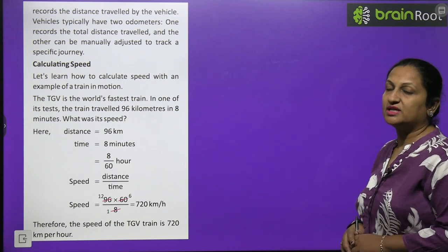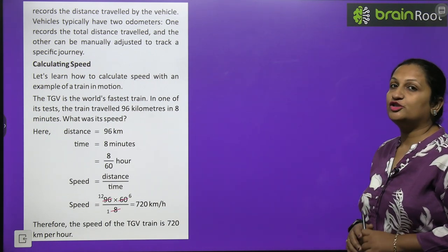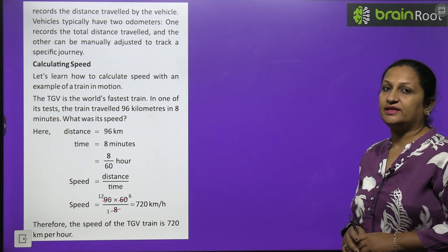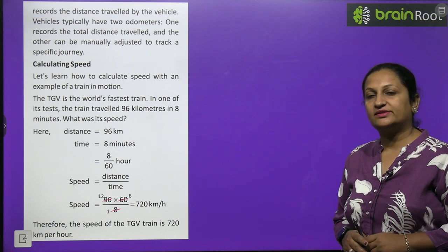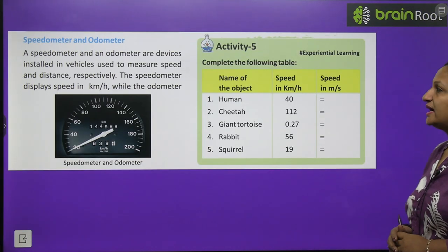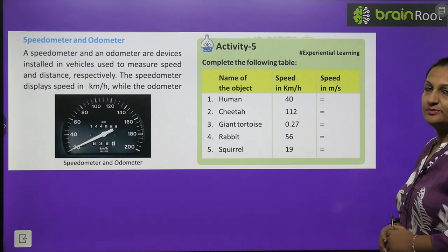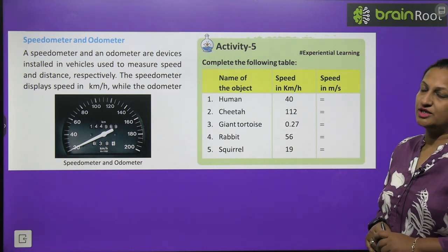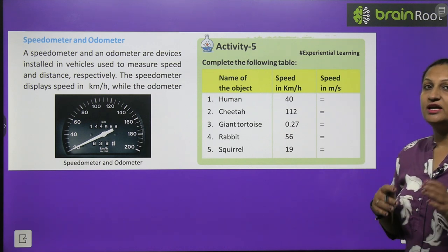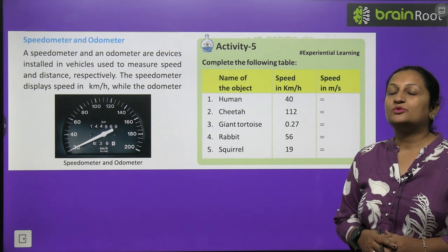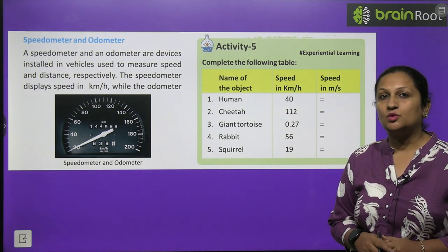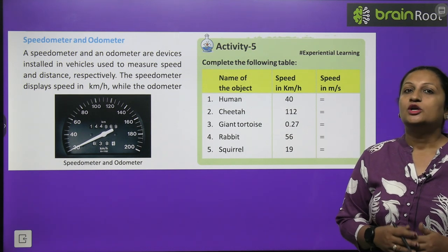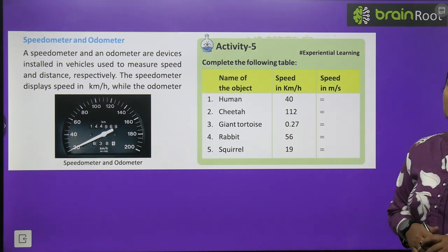Vehicles typically have two odometers — one that measures the total distance traveled, and another that can be manually adjusted to see the distance traveled from one place to another. Activity: complete the following table. Objects are given with their speeds, which need to be changed to meters per second. To convert kilometers to meters, multiply by 1000, and to convert hours to seconds, divide accordingly.